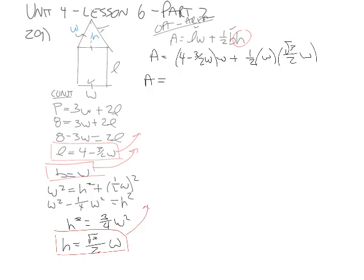So I want to clean that up before I take a derivative. 4W minus 3 halves W squared plus, this is going to be root 3 over 4 W squared. Now I'm going to take the derivative of area with respect to width. So that would be 4 minus 3W plus root 3 over 2 W.